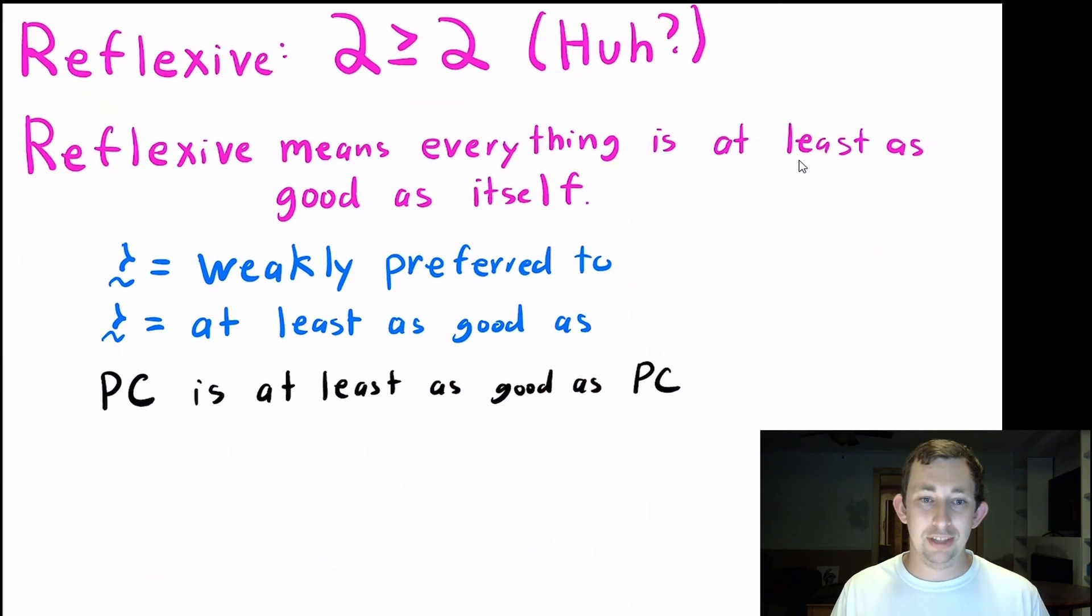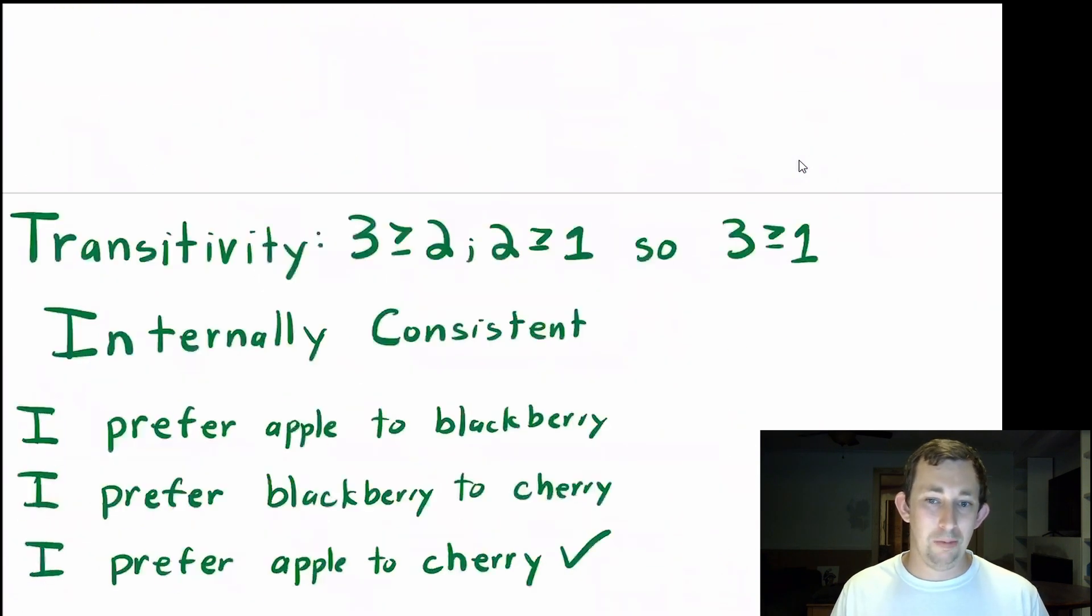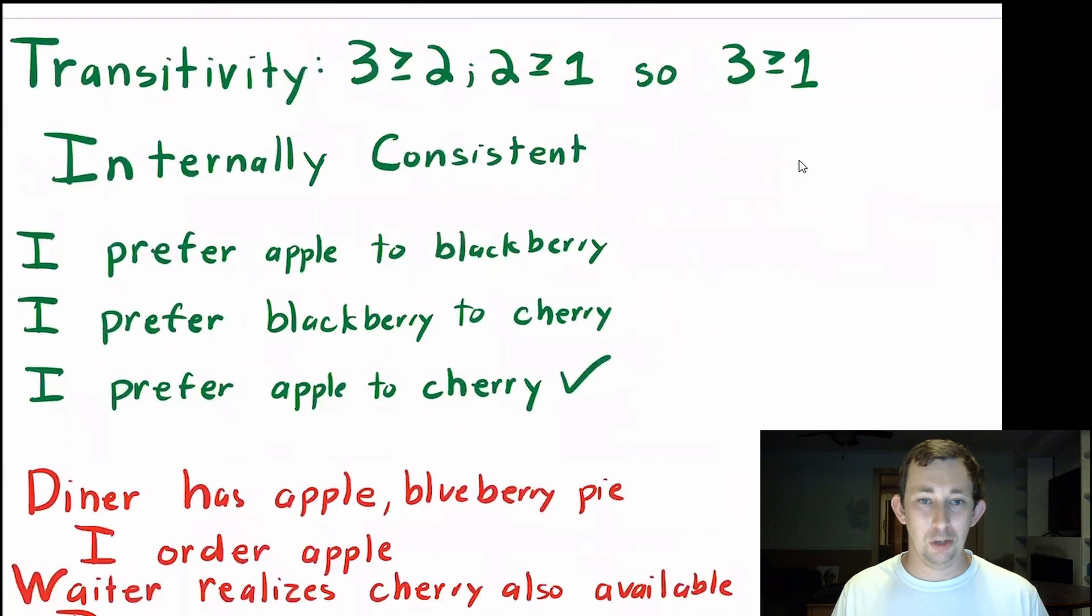Remember, we have that nice squiggly written over a line to mean weakly preferred to or at least as good as. So for Bill, that would mean that a PC is at least as good as a PC or a PC is weakly preferred to a PC. Again, here, I just think two is greater than or equal to two, which is true, but seems kind of weird. Whatever, it's reflexive, so we can move on.